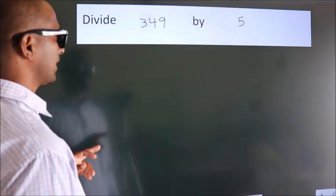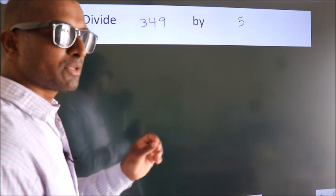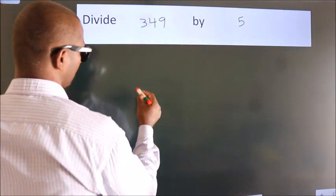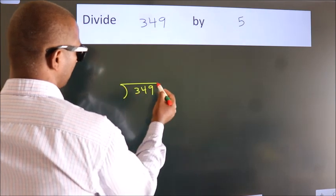Divide 349 by 5. To do this division, we should frame it in this way: 349 here, 5 here.